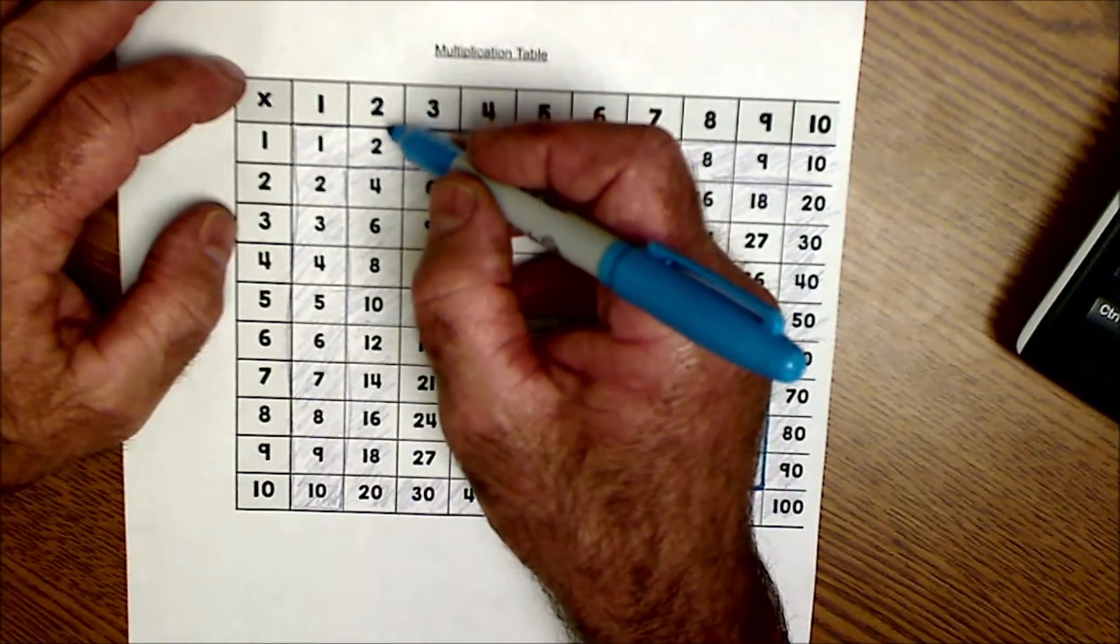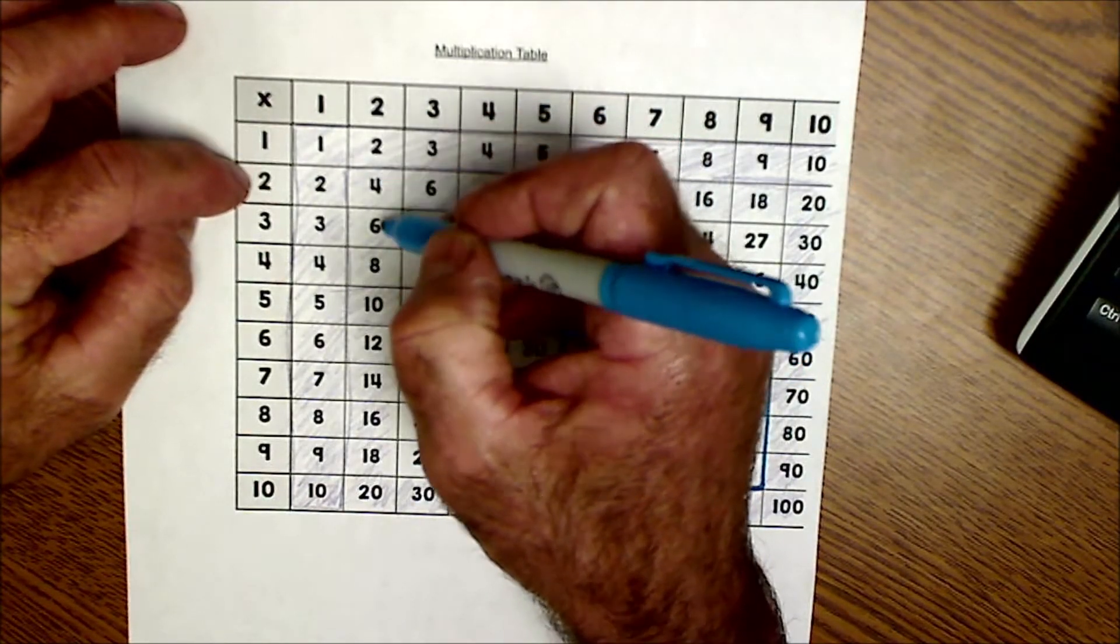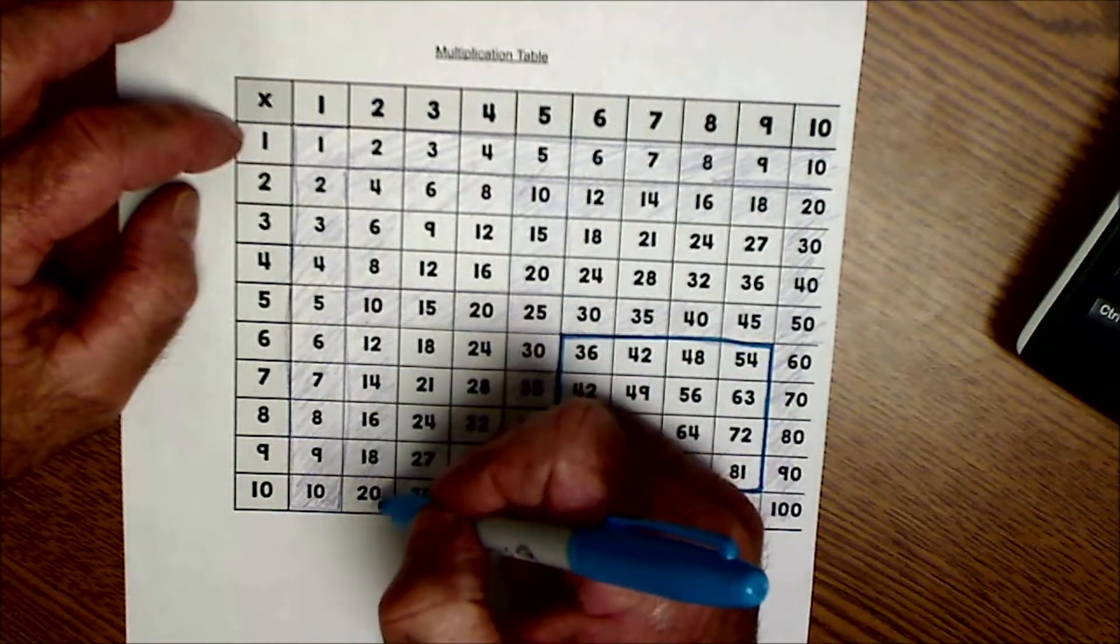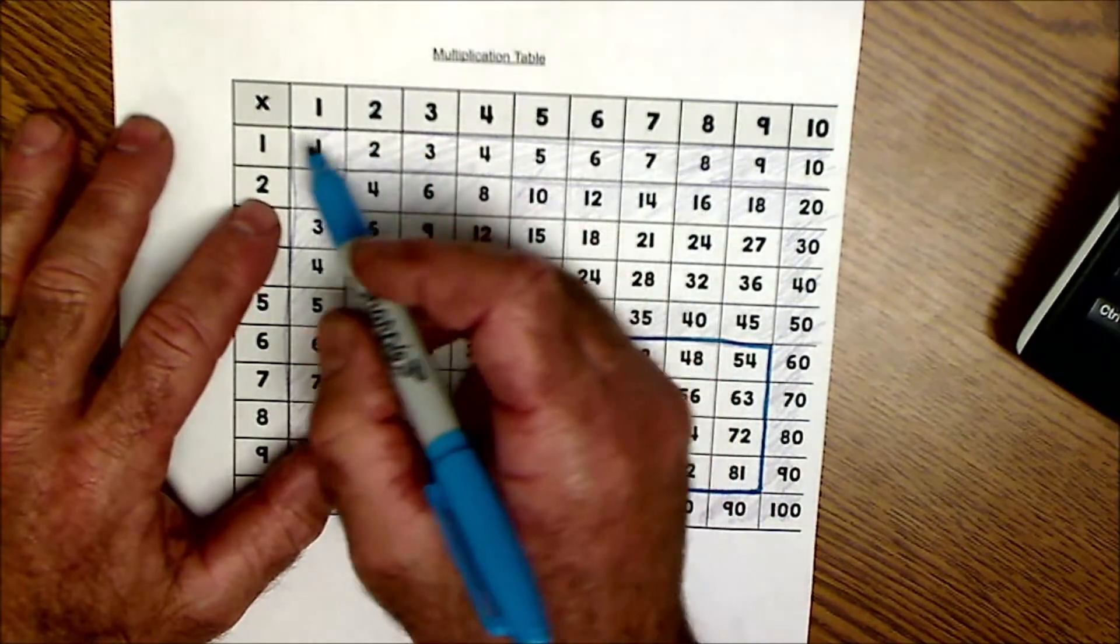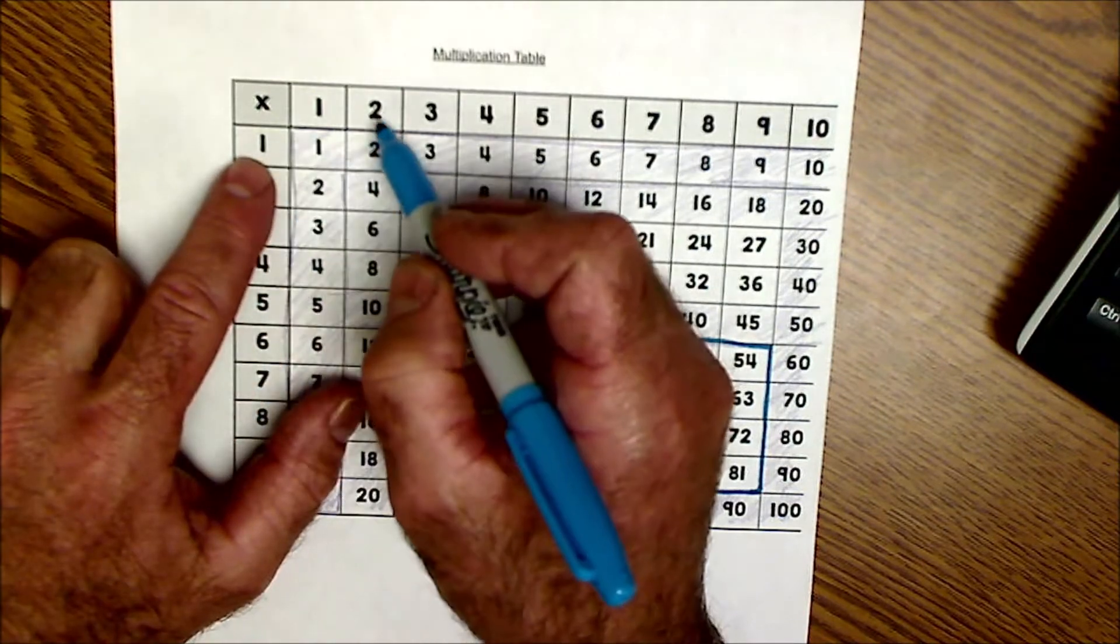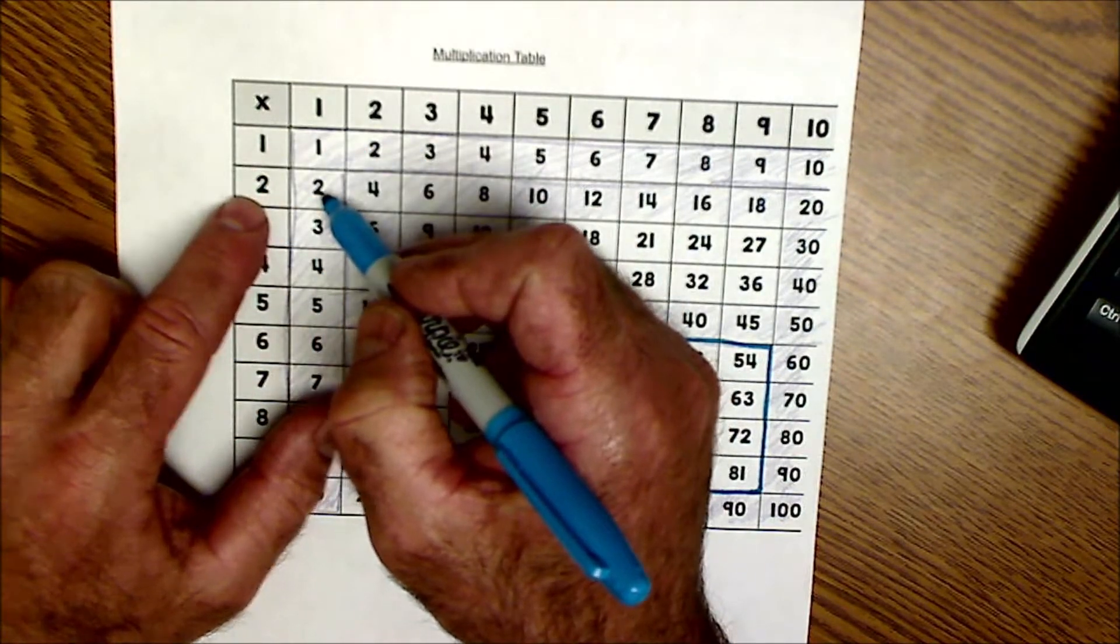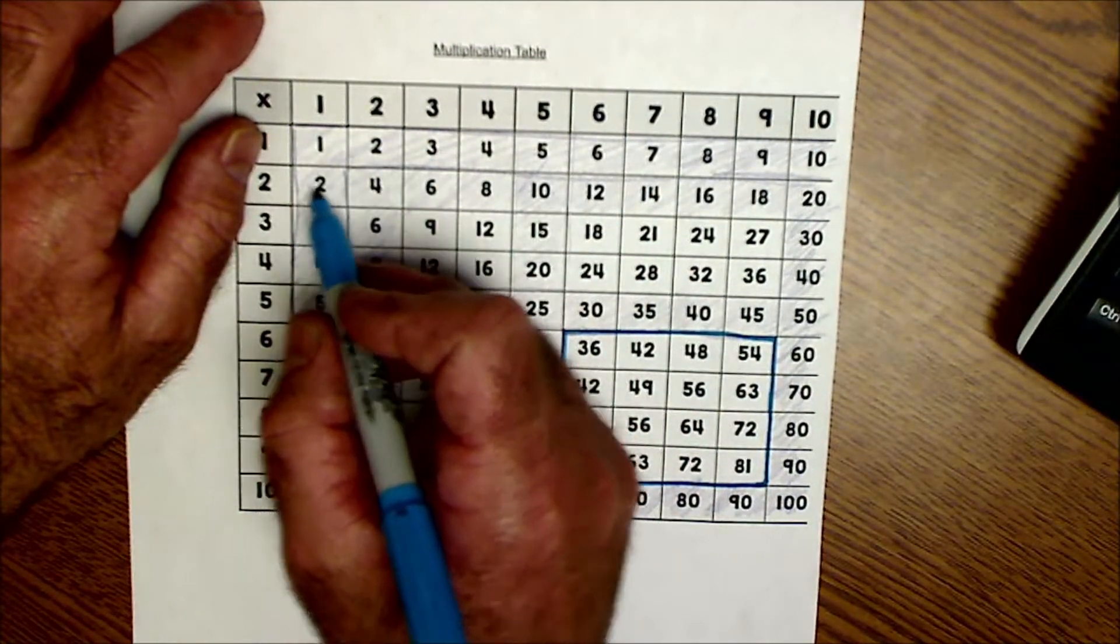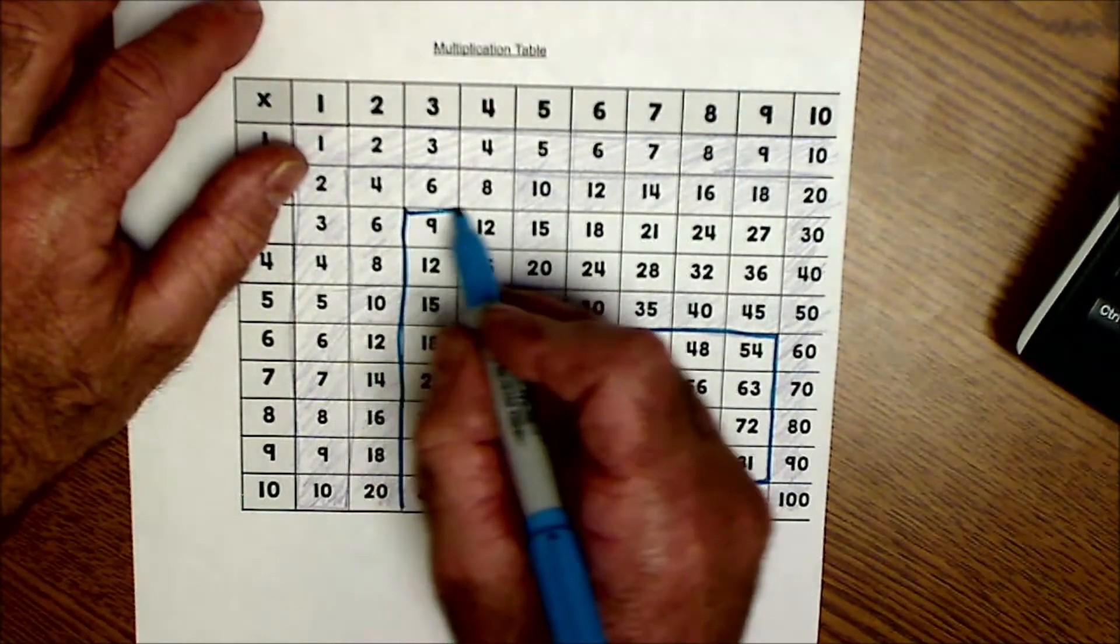Then your 2's. 2's are easy because you just double the number. 2 times 1 is 2, 4, 6, 8, 10, 12, 14, 16, 18, 20. Or multiplication is commutative. So 1 times 2 is the same as 2 times 1. So now I could count by 2's and that'll get that whole column and that whole row. So now I've already taken it down just to 49 terms.